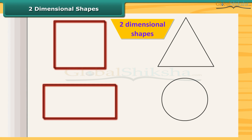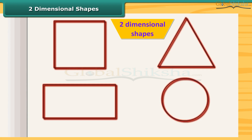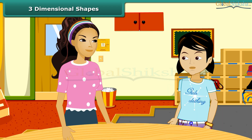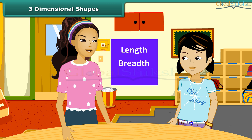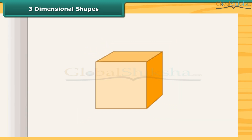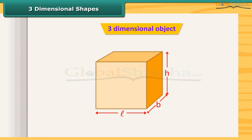A square, rectangle, triangle, circle, etc. are the examples of two-dimensional shapes. What are three-dimensional shapes? A solid object having three measurements like length, breadth, and height are called three-dimensional objects. Look at this cuboid — it has length, breadth, and height, so this is a three-dimensional object.